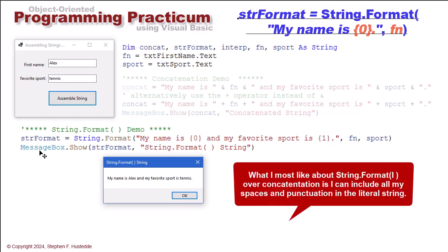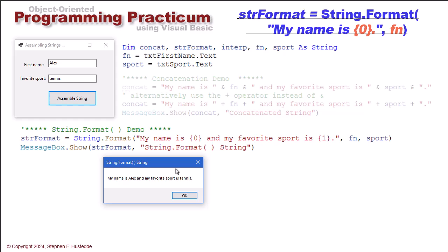The result is then my message box. I am going to show for the prompt String.Format which says my name is Alex, my favorite sport is tennis and then the title is String.Format string. That's String.Format.